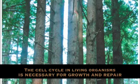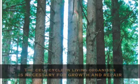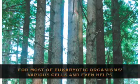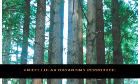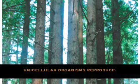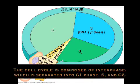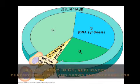The cell cycle in living organisms is necessary for growth and repair for most eukaryotic organisms' varied cells, and even helps unicellular organisms reproduce. The cell cycle is comprised of interphase, which is separated into G1 phase, S, and G2.